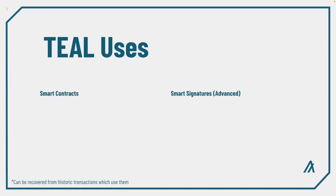The two primary uses of TEAL are smart contracts and smart signatures. Smart contracts are applications which are deployed on-chain by another account. All smart contracts are made up of two separate but required parts: the approval program and the clear state program, which I'll cover in more detail in the next video.